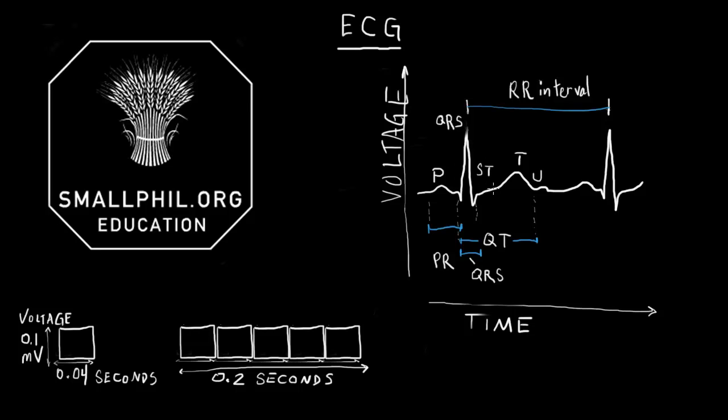The STT wave is ventricular repolarization. The U wave probably represents some sort of ventricular activity such as an after-polarization or after depolarization.